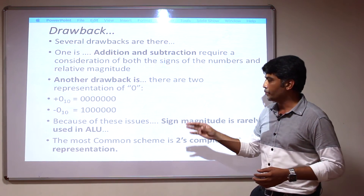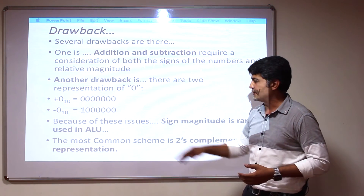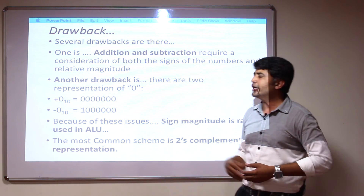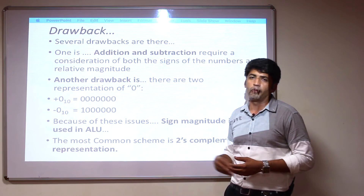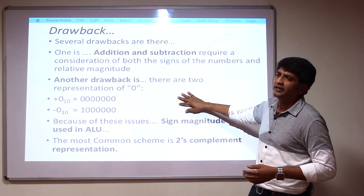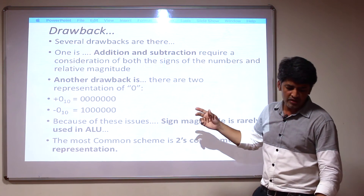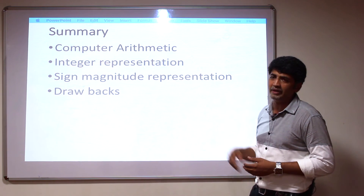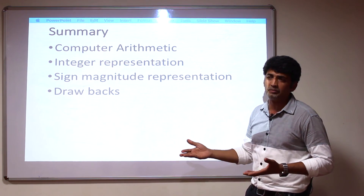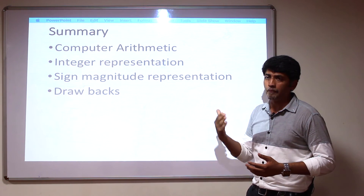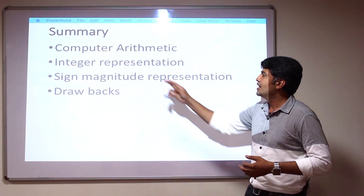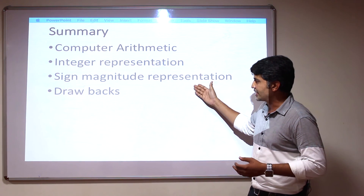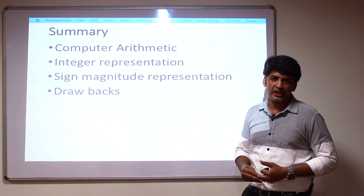The solution to these drawbacks is that the most common scheme is the two's complement representation. By using two's complement representation, we can avoid these drawbacks. In summary, we discussed: what is computer arithmetic, the need for computer arithmetic in a computer system, integer representation, sign magnitude representation, and its drawbacks. Thank you.